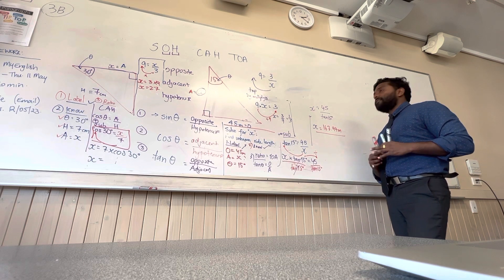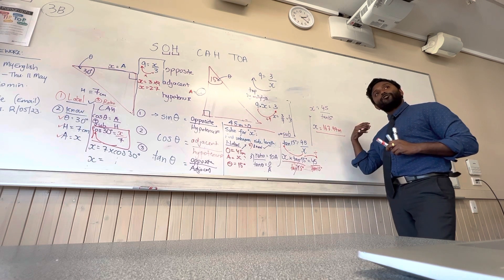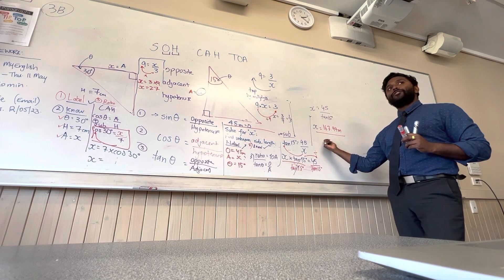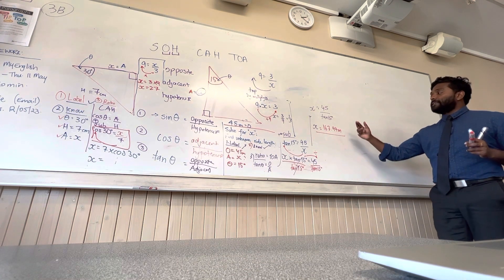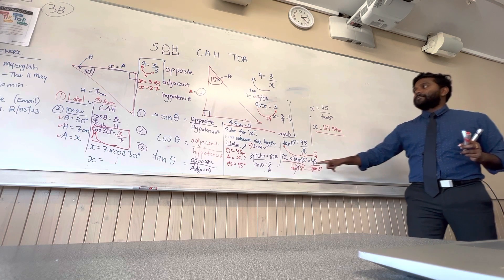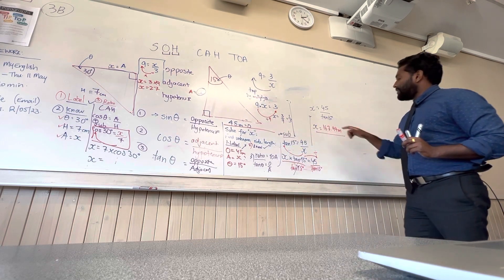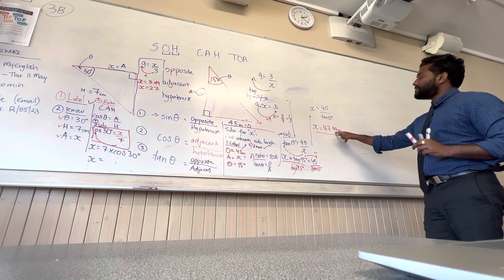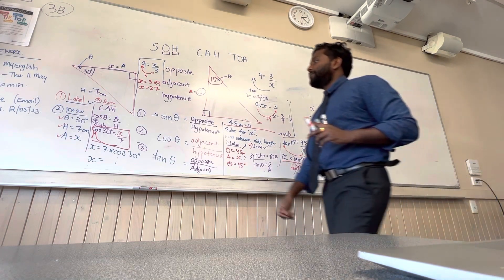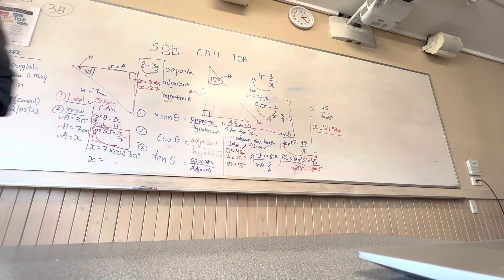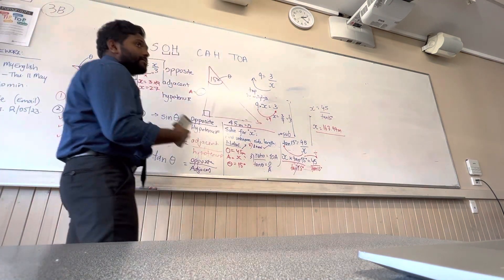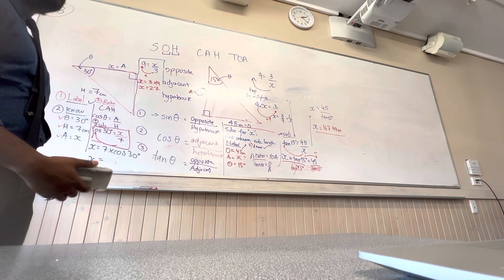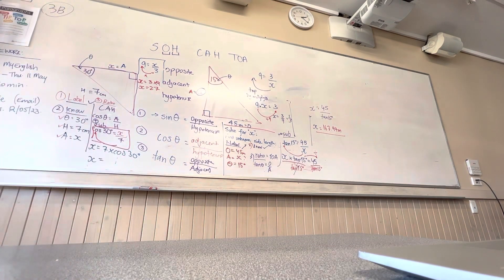Then we solve for x. You have to be extremely careful: first, make sure you've entered it correctly in the calculator. Second, you need to put the units — it's in meters. And if the question says to two decimal places, that also needs to be there. It's not exactly the answer you want to get — you want to go according to that journey. I'm going to give you another question to have a go at.